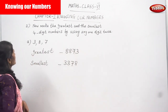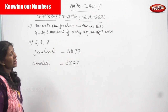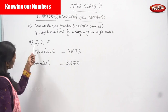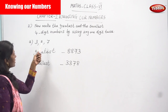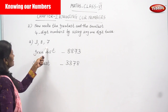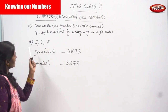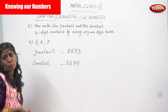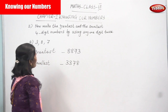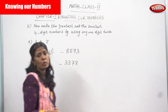We are going to make the greatest and the smallest four-digit numbers using any one digit twice. They are given three numbers, and you have to make a four-digit number. Since only three numbers are given, you can take any one digit twice to form the four-digit number.